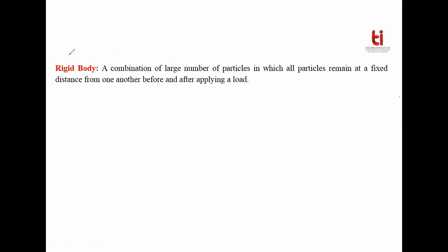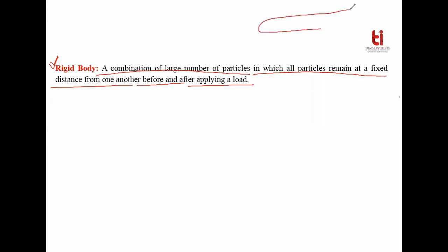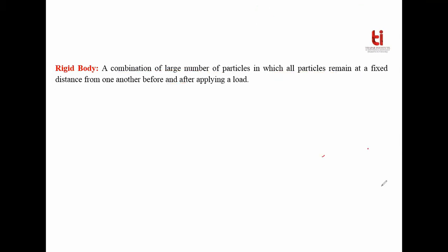Before going into more detail about equilibrium of rigid body, let's first understand what we mean by a rigid body. A rigid body means a combination of a large number of particles where all particles remain at a fixed distance from one another before and after applying a force. If the arrangement of particles does not change, you can call this combination a rigid body.